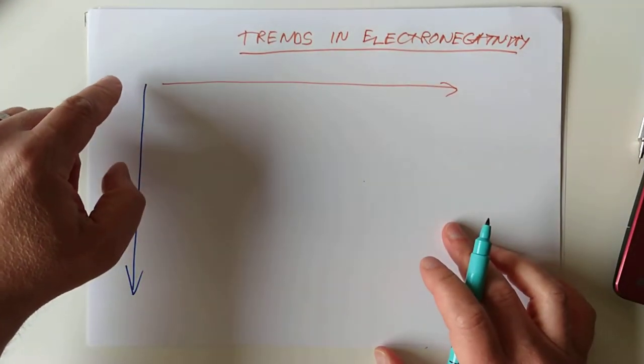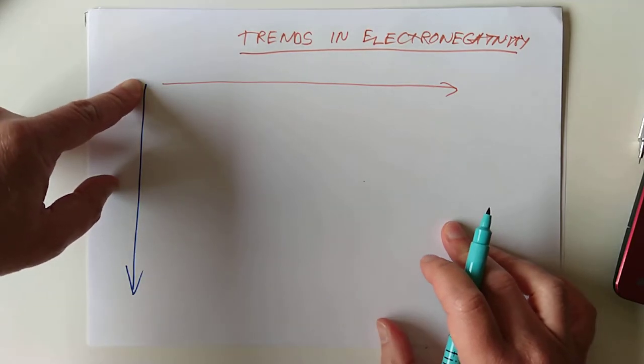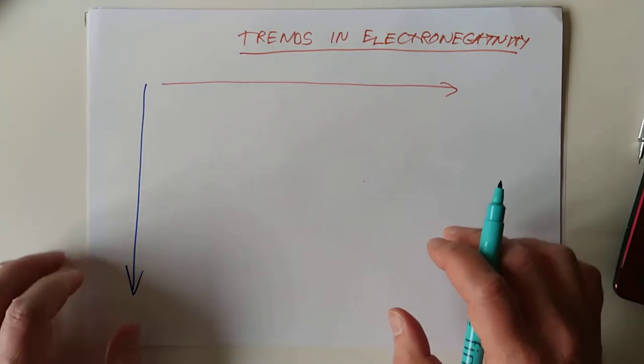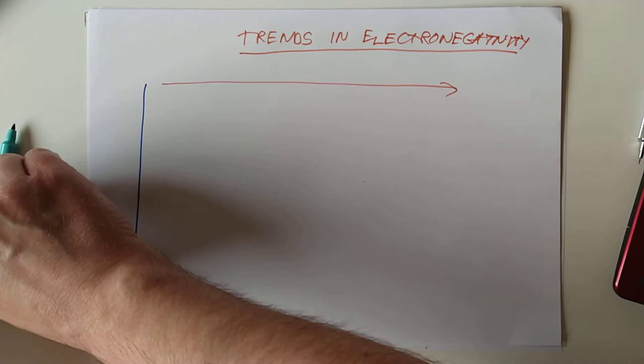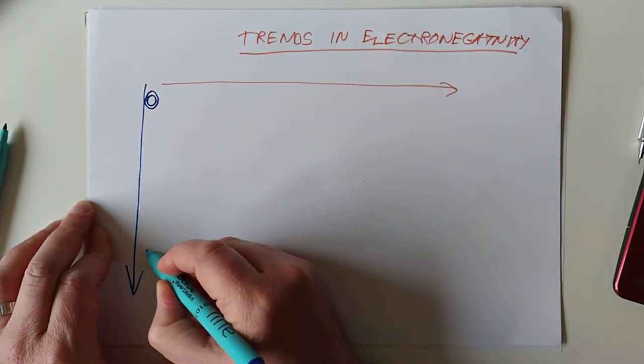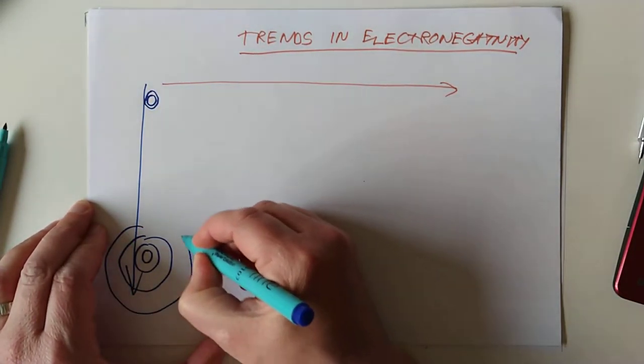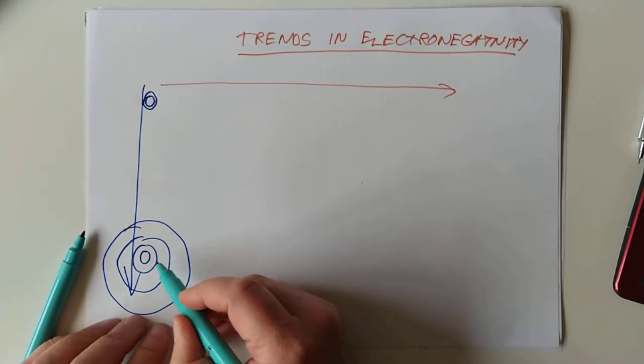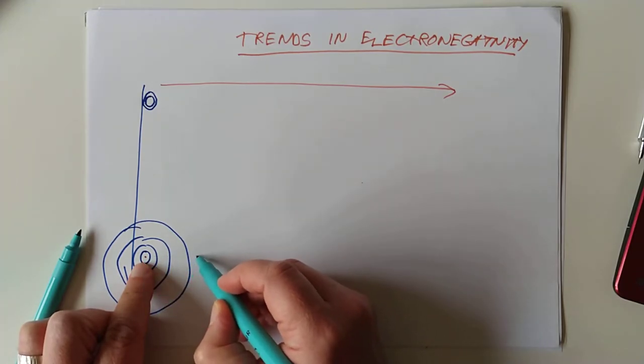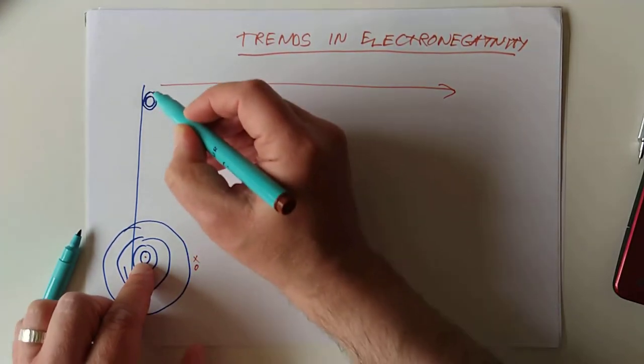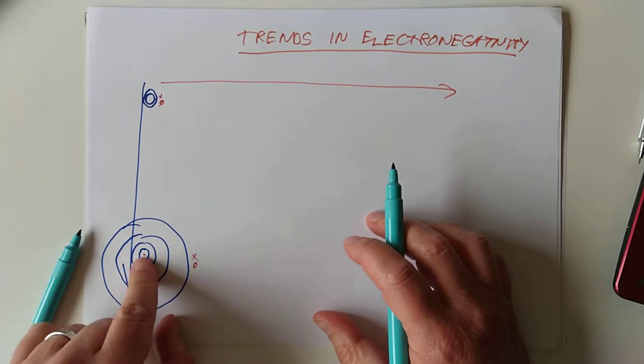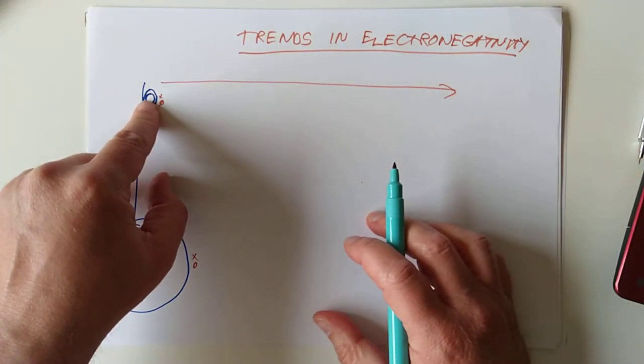Imagine what would happen to the pull between the center of an atom here on the shared pair and the pull between here on the shared pair. We've only got two layers of electrons here. Down here, multiple layers. Look, it's that shielding thing again. Because these intermediate layers act like a shield, this nucleus here will have a much weaker pull on any shared pair of electrons than this nucleus here. And the second reason, if you look at the distance, this nucleus is much further away from the shared pair, this nucleus is much closer than the shared pair.